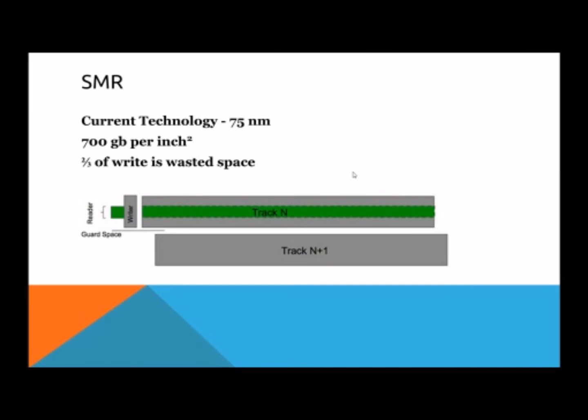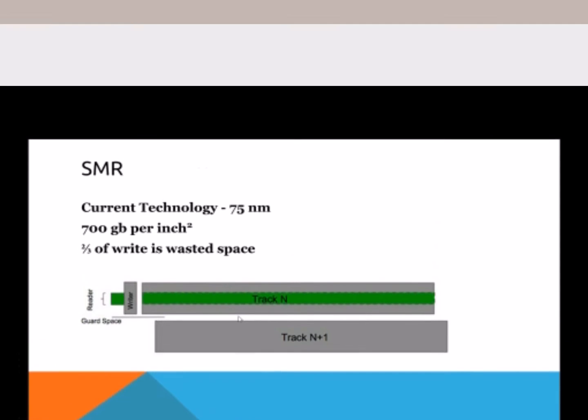Currently, a write head writes a path that is 75 nanometers wide. This results in an aerial density of 700 gigabytes per square inch. But as you can see in the picture right here, two thirds of the write space is wasted. This gray area above and below is the buffer zone between different tracks. And even here you have guard space in between the buffer zones.